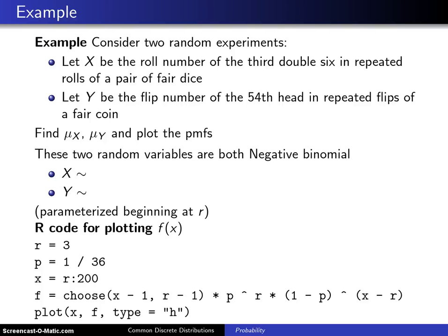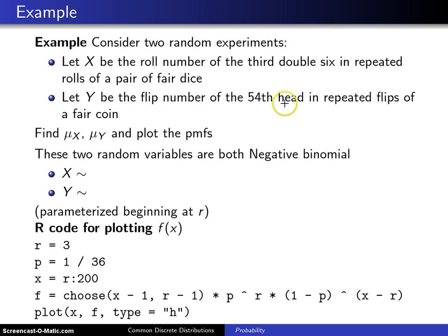Consider two random experiments. In the first experiment, let the random variable X be the roll number of the third double six in repeated rolls of a pair of fair dice. In the second experiment, let the random variable Y be the flip number of the fifty-fourth head in repeated flips of a fair coin.